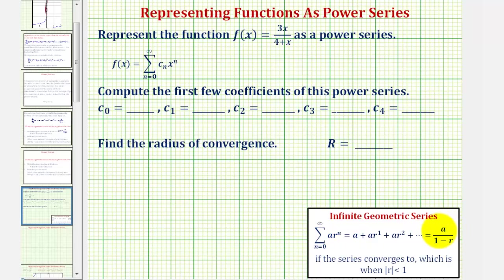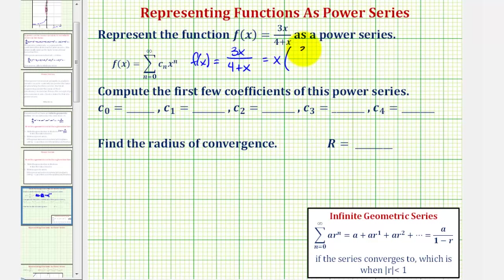Looking at this formula, a would be a constant, but notice we have an extra factor of x in the numerator. So for f(x) = 3x divided by the quantity 4 plus x, to help it fit this form, let's factor out the x from the numerator and write this as x times 3 over the denominator. Our denominator needs to be a difference, not a sum, so let's write 4 plus x as 4 minus negative x.